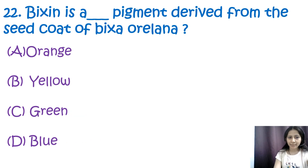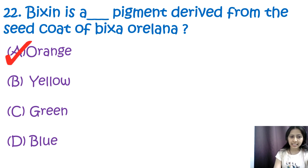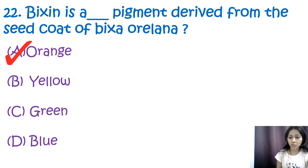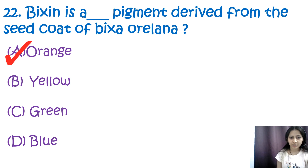Question 22: Bixin is a blank pigment derived from the seed coat of Bixa orellana. Options are orange, yellow, green, and blue. The correct answer is A, orange. Bixin is an orange-red color pigment derived from the seed coat of Bixa orellana. This pigment is used in a variety of applications including food coloring.